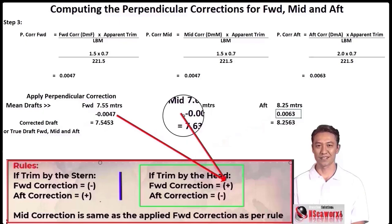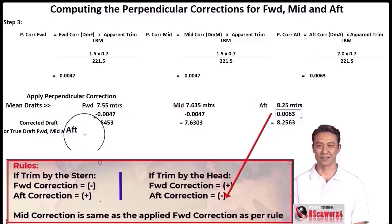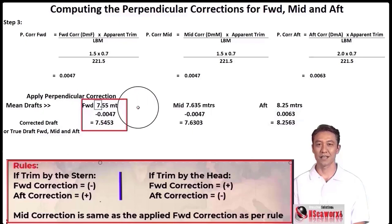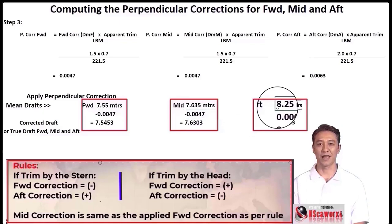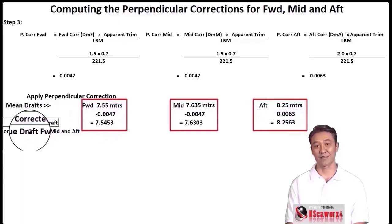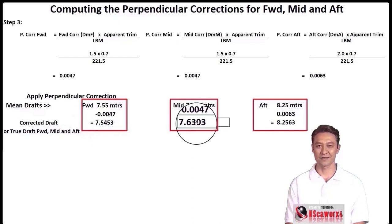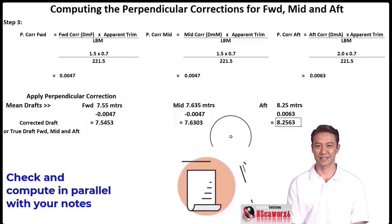In this scenario we are subtracting from forward and mid drafts, and adding to aft. Forward: 7.55 minus 0.0047. Mid: 7.6635 minus 0.0047. Aft: 8.25 plus 0.0063. We now have the corrected — or true — drafts: forward = 7.5453 m, mid = 7.6303 m, and aft = 8.2563 m. Take these down and include them in your notes.